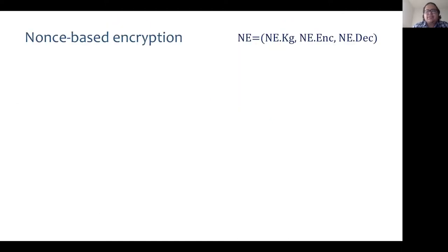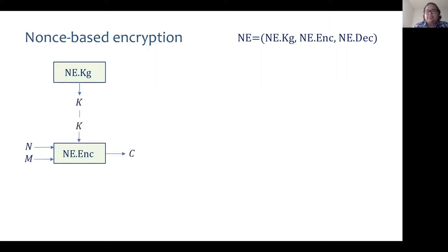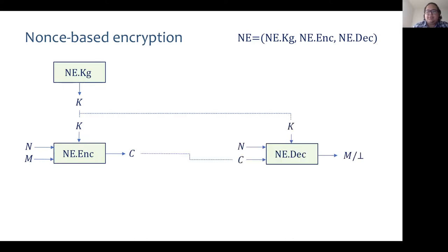Since this talk is about nonce-based encryption, let me quickly refresh what I mean by that. A nonce-based encryption scheme consists of three algorithms. The key generation algorithm returns a key. The encryption algorithm takes as input a message and a nonce along with the key and returns a ciphertext. The decryption algorithm takes as input a nonce and a ciphertext along with the key and either returns a message or the bottom symbol indicating failure.